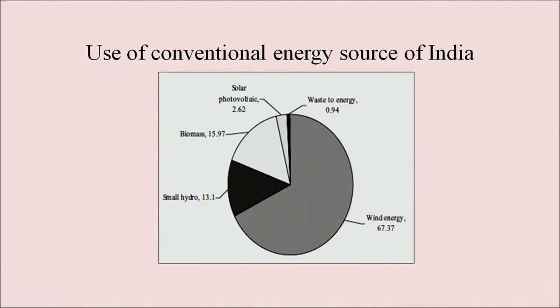Looking at the uses of conventional energy sources in India, as shown in the diagram, we have discussed the solar photovoltaic use, then waste energy, wind energy, biomass and hydropower.